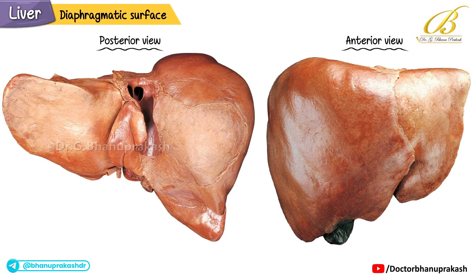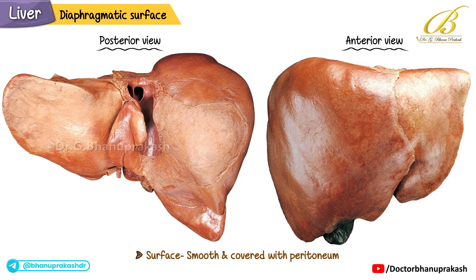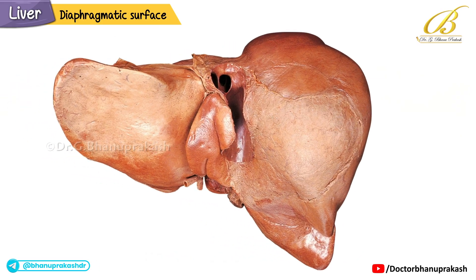This image shows the diaphragmatic surface of the liver. Most of the surface is smooth and covered with peritoneum, facing superiorly and anteriorly, but on the right there is a rough bare area without peritoneum that faces posteriorly.